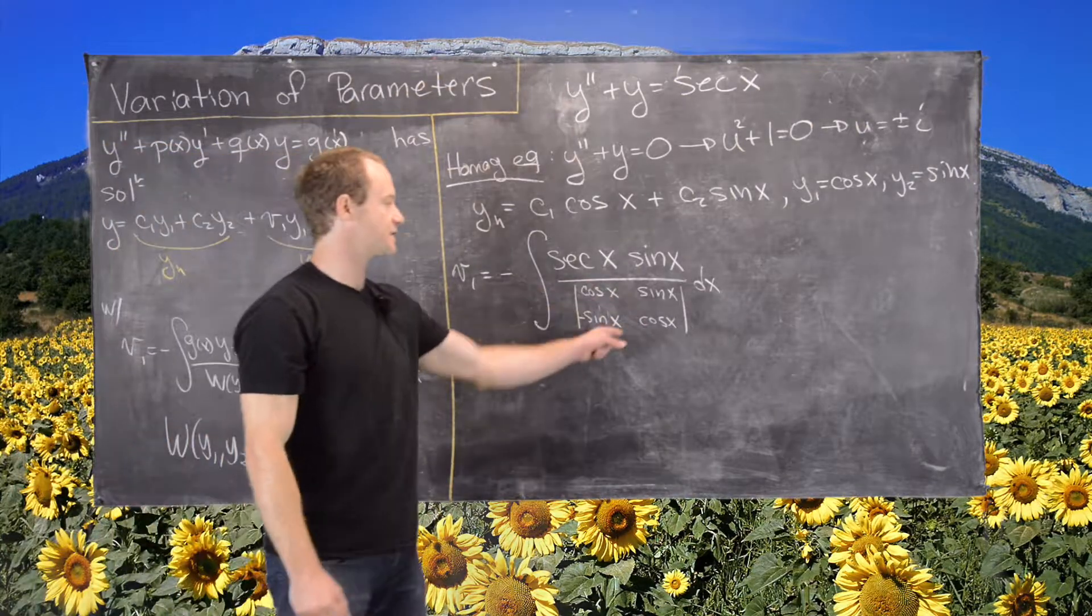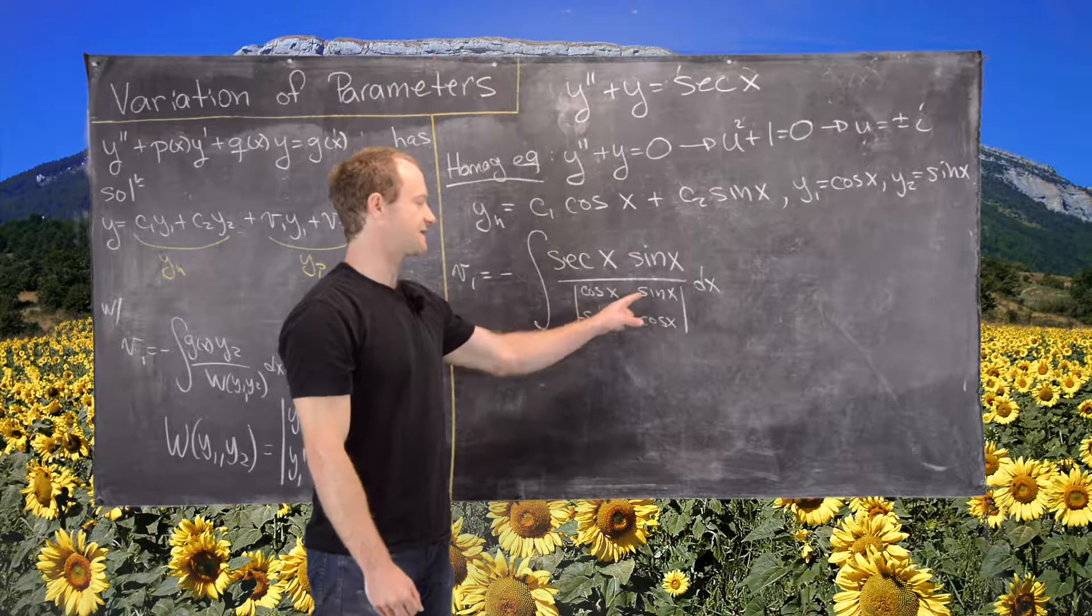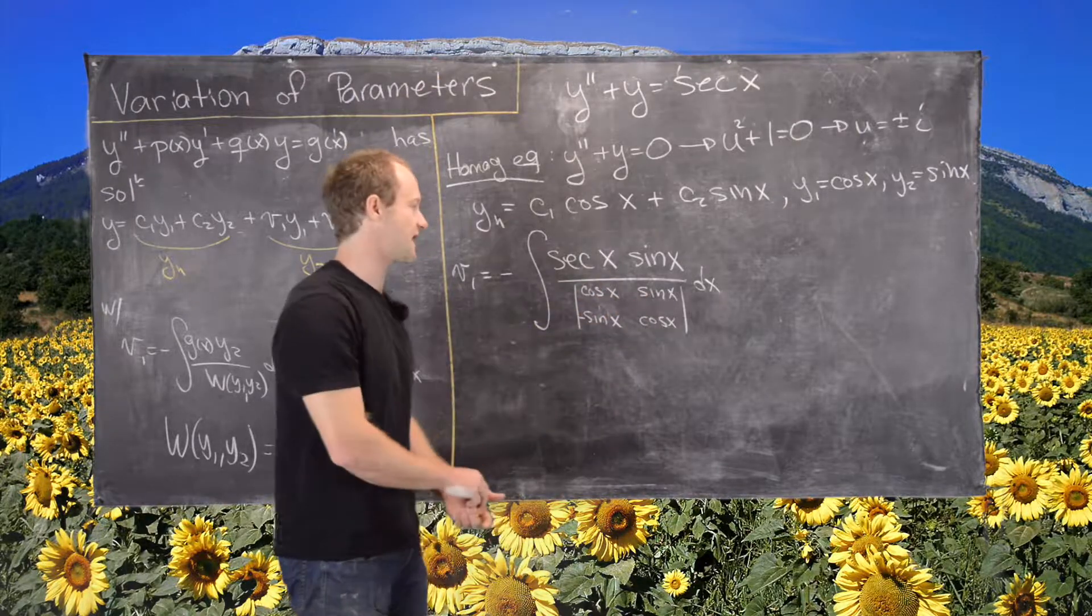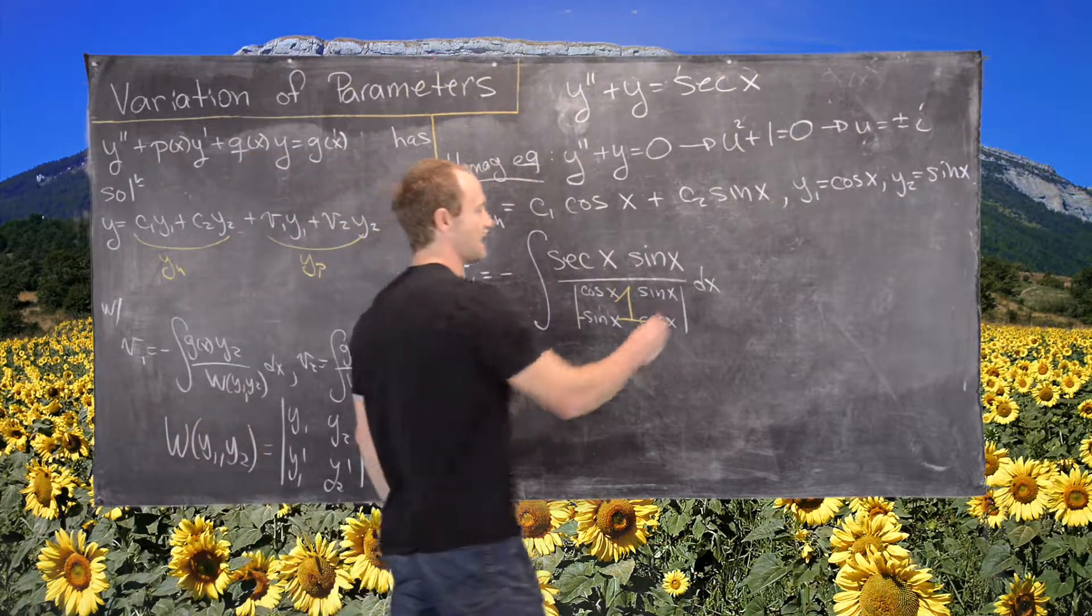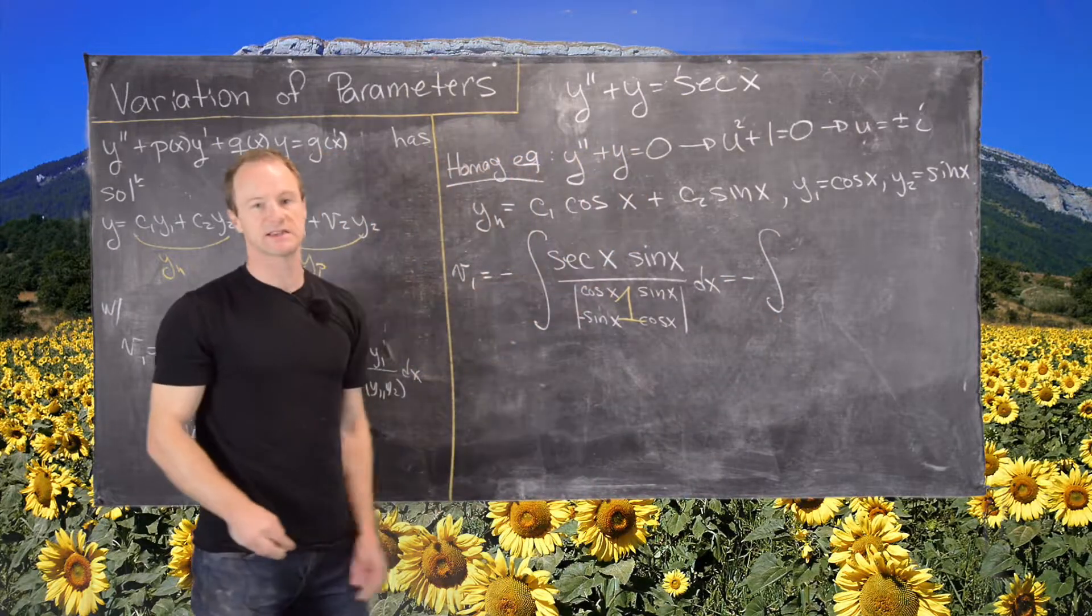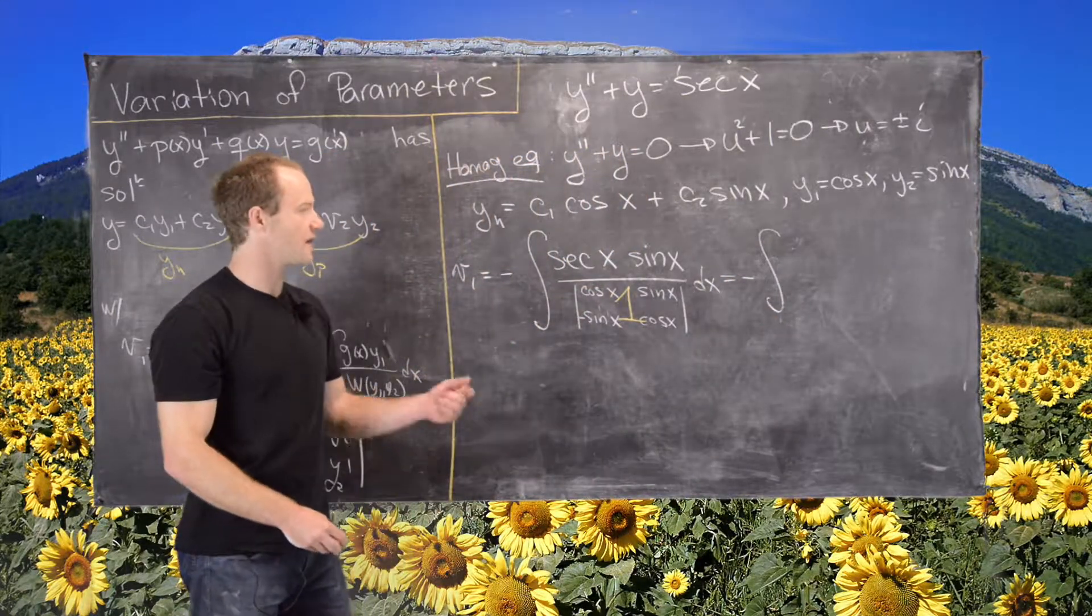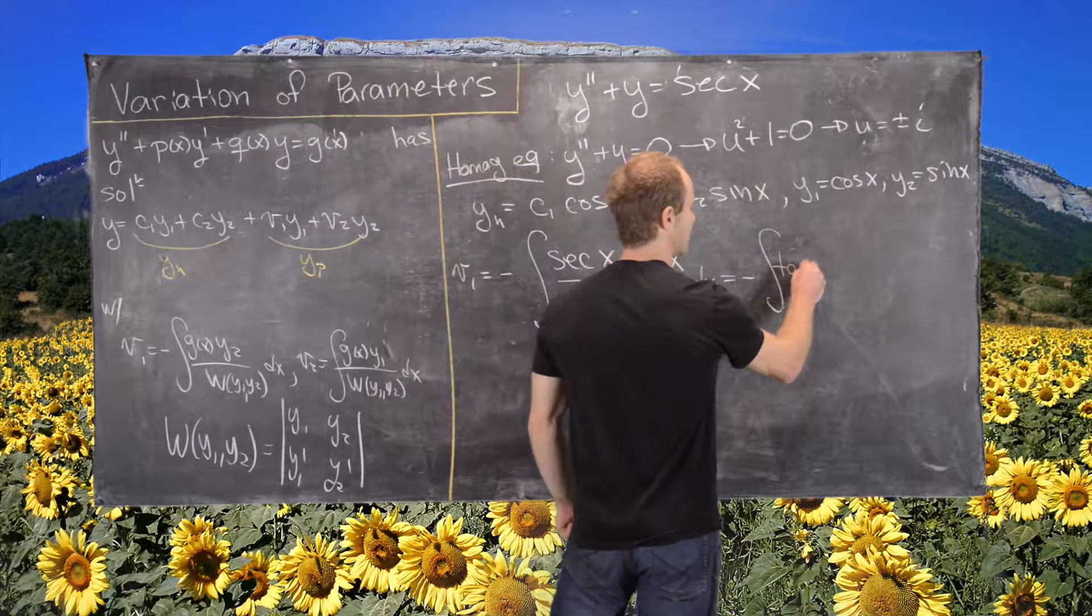But the great thing here is notice what this determinant is. It's cosine squared minus negative sine squared. So it's cosine squared plus sine squared. So this whole thing is just the number one. And that gives us negative the antiderivative of secant times sine. So recall that secant is 1 over cosine. So that means this is negative the antiderivative of tangent of x.